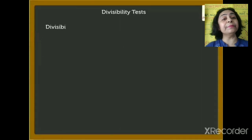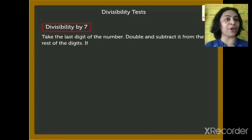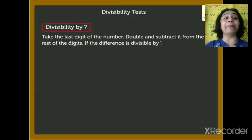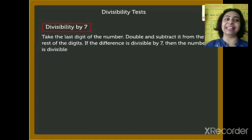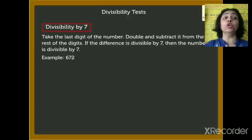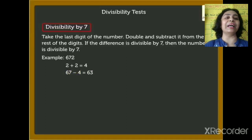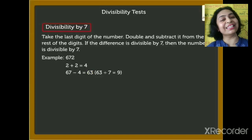Divisibility by 7 is a little different. Take the last digit of the number, double it, and subtract it from the rest of the digits. If the difference is divisible by 7, then the whole number is divisible by 7. Example: 672. The last digit is 2. Double it: 2 plus 2 is 4. The rest of the number is 67. Subtract: 67 minus 4 is 63. Is 63 divisible by 7? Yes, so 672 is divisible by 7.